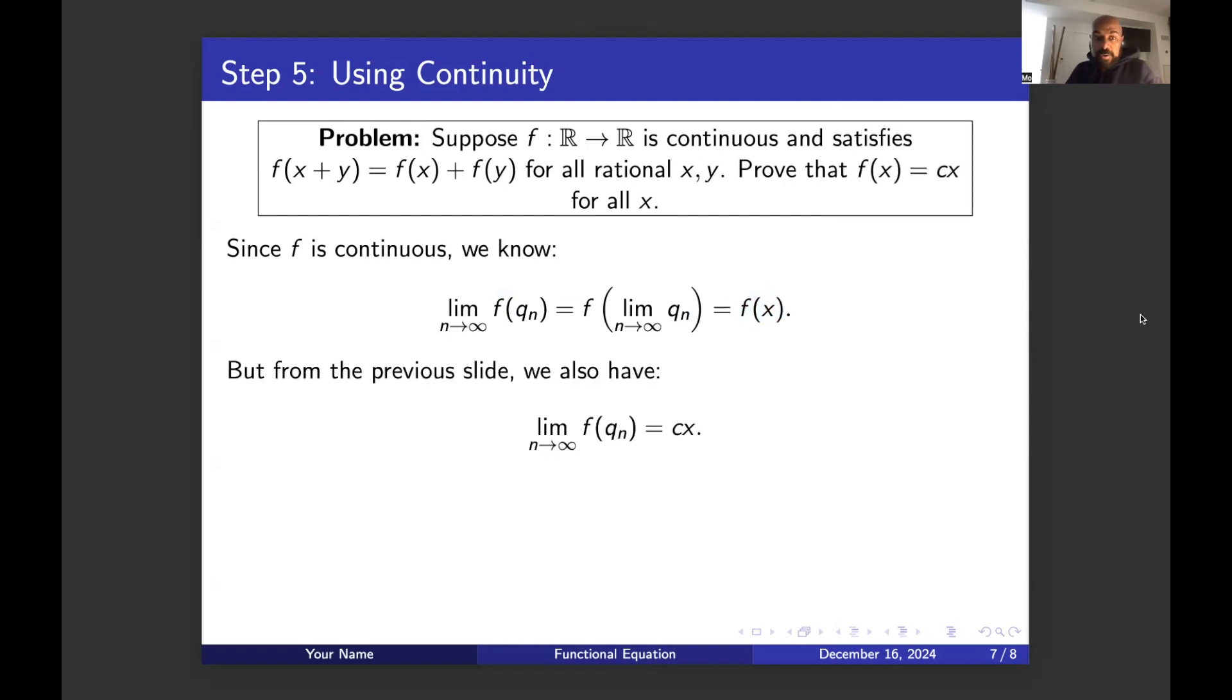Okay, so if we put that all together, knowing that f of q_n actually converges to c x, we get that f of x is equal to c x for this arbitrary real number x. And so the value c, being f of 1, actually gives us that f of x is c x for all x.